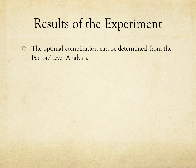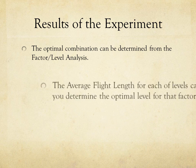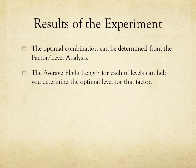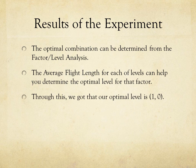The optimal combination can be determined through factor level analysis. If you look at the average flight length for each of the levels, the higher of the two numbers can point out the optimal combination for your airplane. Using this, we got that our optimal level was (1,0), which corresponds to a long length and less weight.